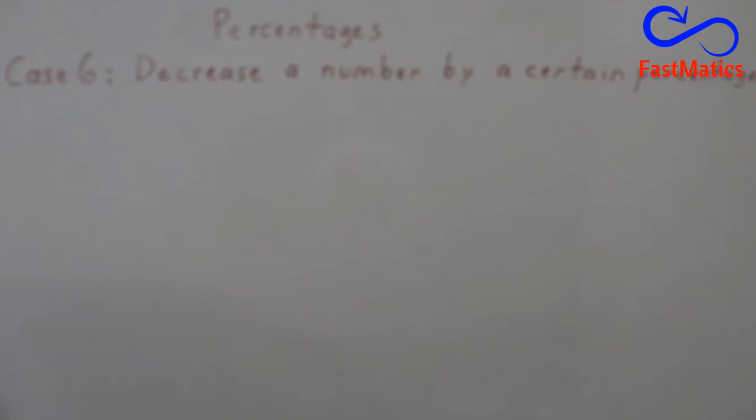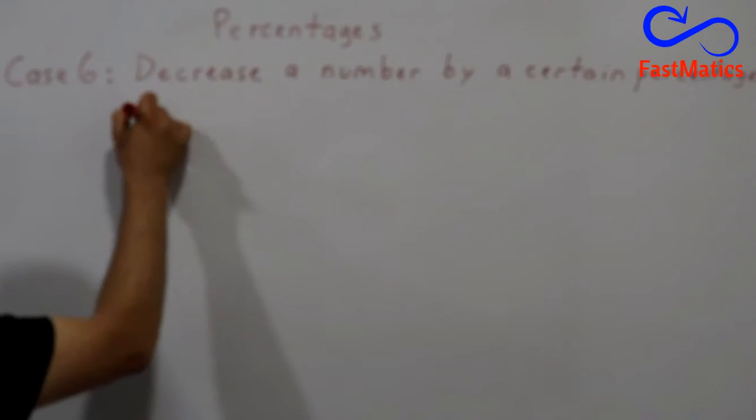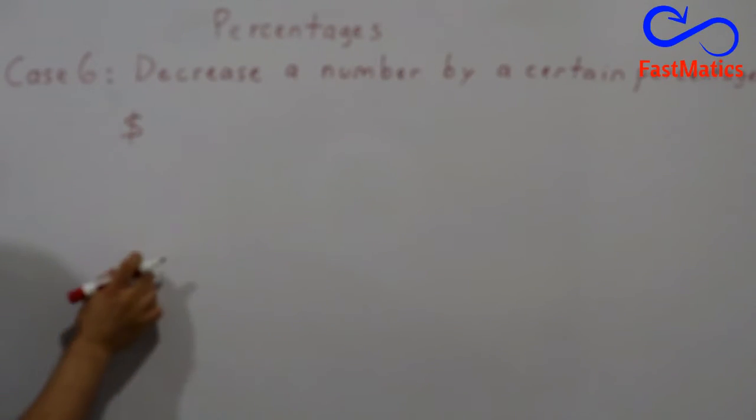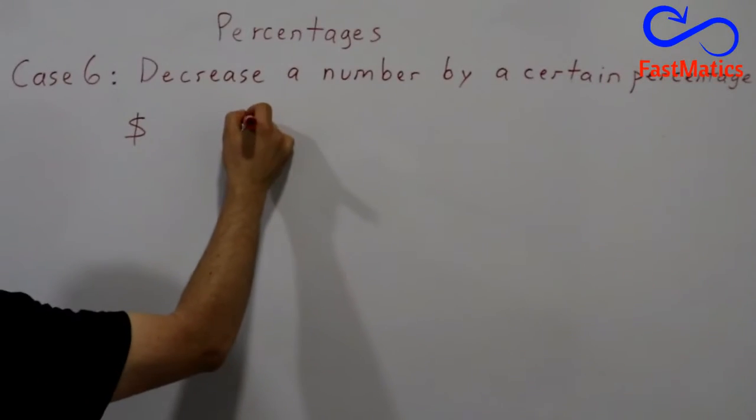First of all we have to remember that all percent problems can be solved with rule of three. So we are going to make a rule of three identifying characters of the story. In this story we have money and we have percentage.